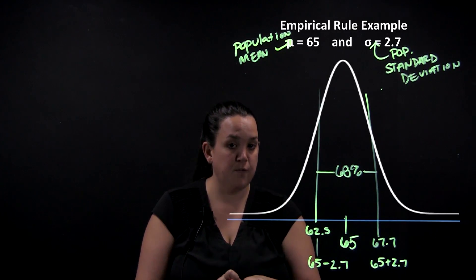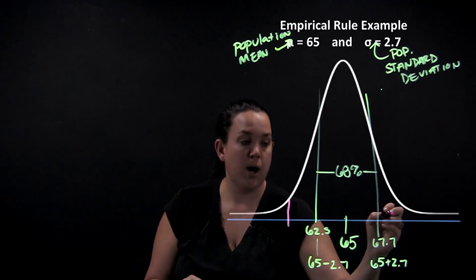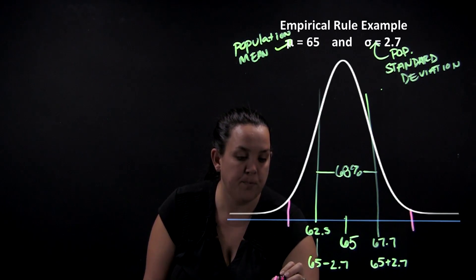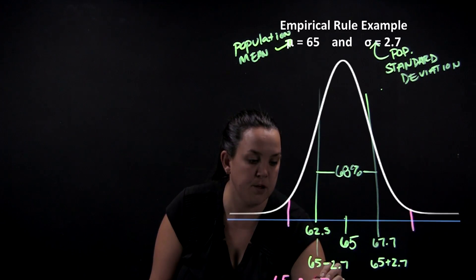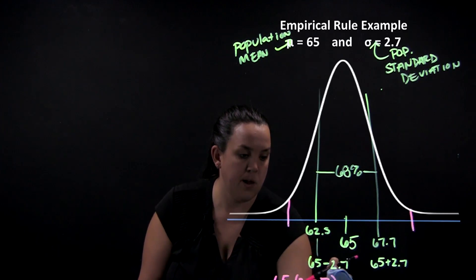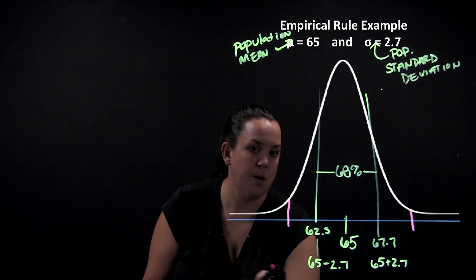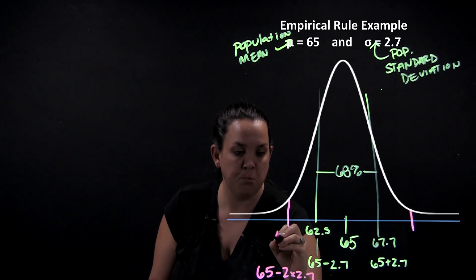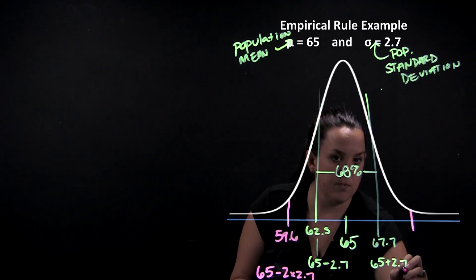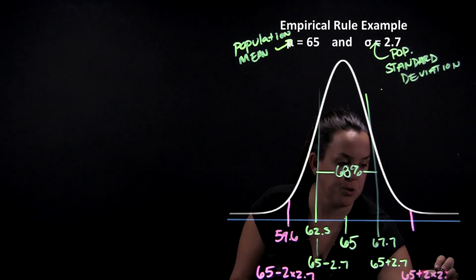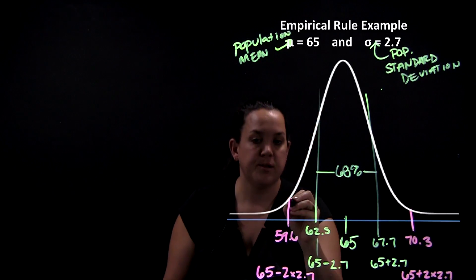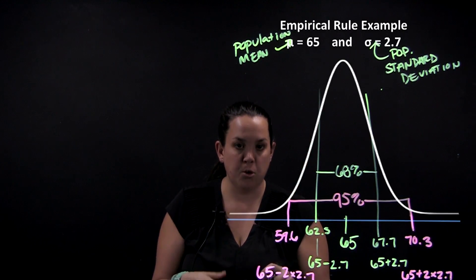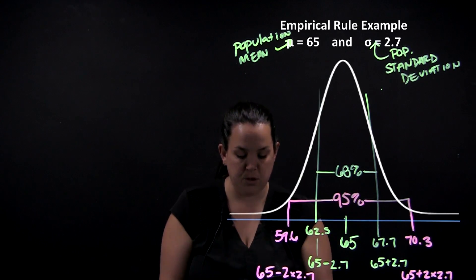So then what the empirical rule says, if you go out two standard deviations, I'm going to now take 65 but I will subtract 2 times 2.7, and that brings me down to 59.6. And then if I add two standard deviations up here, so 65 plus 2 times 2.7, I would come up to 70.3. And so what the empirical rule says is in between those two values, from 59.6 up to 70.3, 95% of college female heights will be contained within those two numbers.